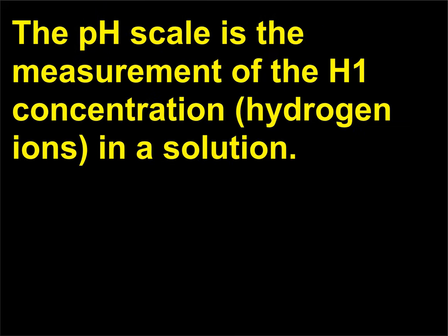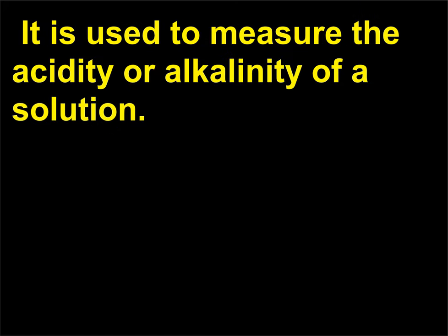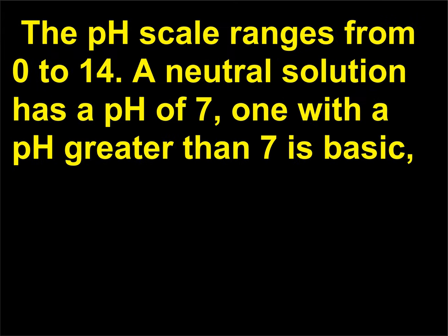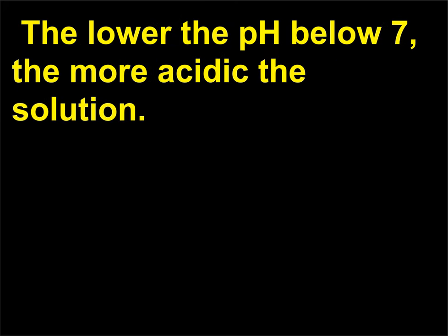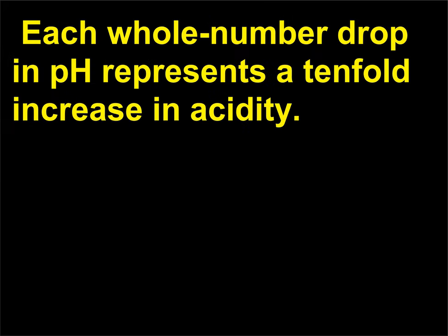The pH scale is the measurement of the H+ concentration (hydrogen ions) in a solution. It is used to measure the acidity or alkalinity of a solution. The pH scale ranges from 0 to 14. A neutral solution has a pH of 7; one with a pH greater than 7 is basic or alkaline, and one with a pH less than 7 is acidic. The lower the pH below 7, the more acidic the solution. Each whole number drop in pH represents a tenfold increase in acidity.